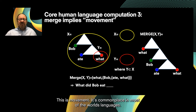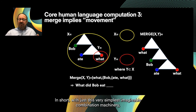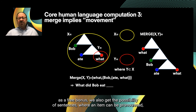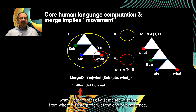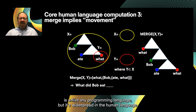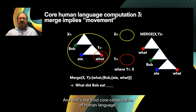This is movement — commonplace in most of the world's languages. With just this simplest imaginable combination of machinery needed to get digital infinity at all, we also get, as a free bonus, the possibility of sentences where an item is pronounced at the front but interpreted at the end. This possibility of dual positions of appearance and interpretation is unlike any programming language but is widespread in human language. That's the third core computation.